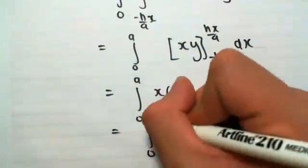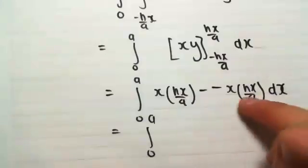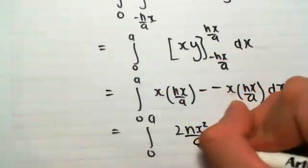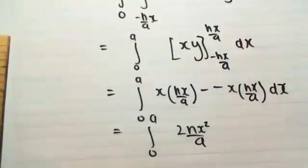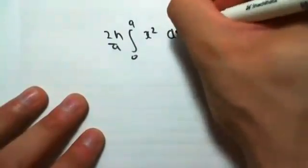So if we were to simplify this, we would have, so the minus and the minus give us plus, so it's those two plussing each other. So 2hx squared on a. I'm just going to take the constant out the front, the 2h on a outside the front, because that's just a constant. 2h on a, from 0 to a, of x squared dx.